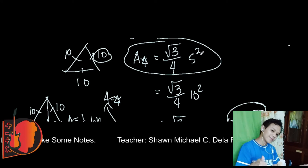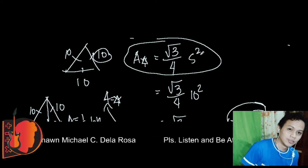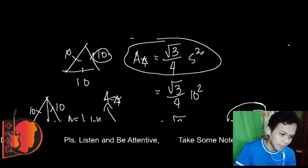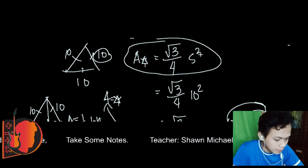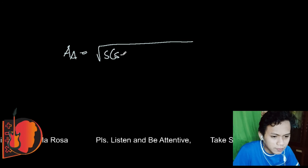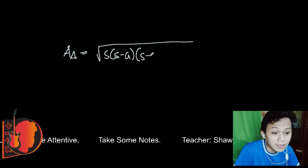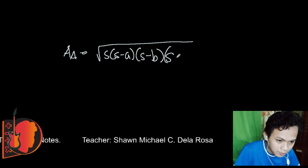Now let's go to Heron's formula. This is the formula for the area of a triangle when all three sides are given. The formula is: area equals the square root of s times (s minus A) times (s minus B) times (s minus C), where s is the semi-perimeter.